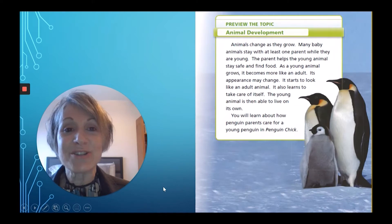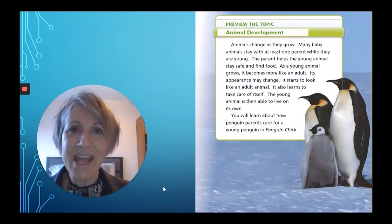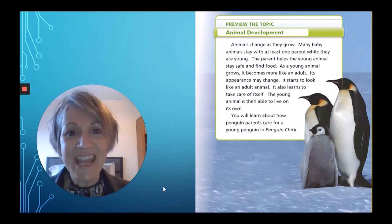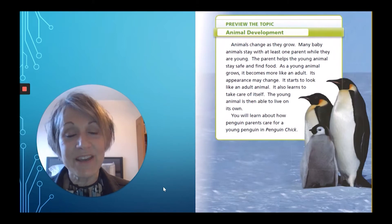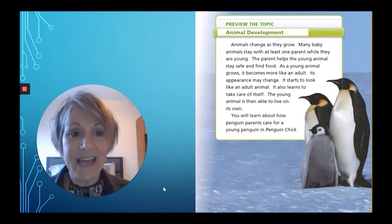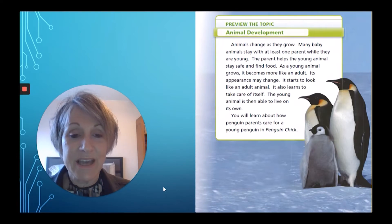Let's look at the introduction to our lesson. Think about how humans and animals, plants and insects, they all change as they grow. Many baby animals stay with at least one parent while they are young. The parent helps the young animal stay safe and find food. As a young animal grows, it becomes more like an adult. Its appearance may change. It starts to look like an adult animal. It also learns to take care of itself. The young animal is then able to live on its own.